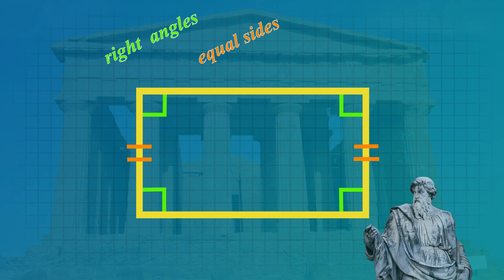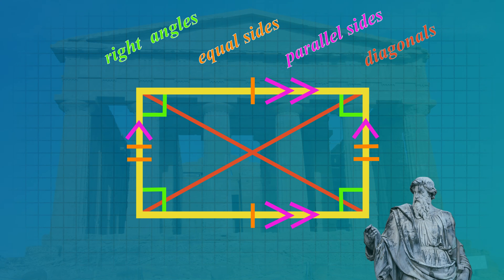Let's see an example of the properties of a rectangle. Firstly, there are four right angles. Then there are two short sides that are equal and two long sides that are equal. Two sides are parallel in the same direction and there are another pair of parallel sides in a different direction. Finally, the diagonal lines are equal and they bisect or cut each other in half.